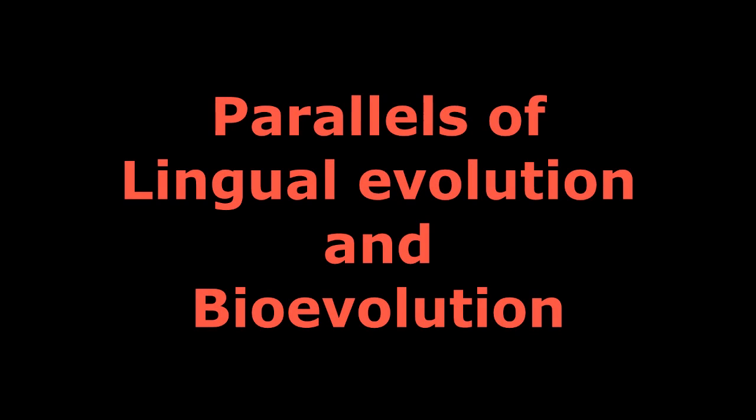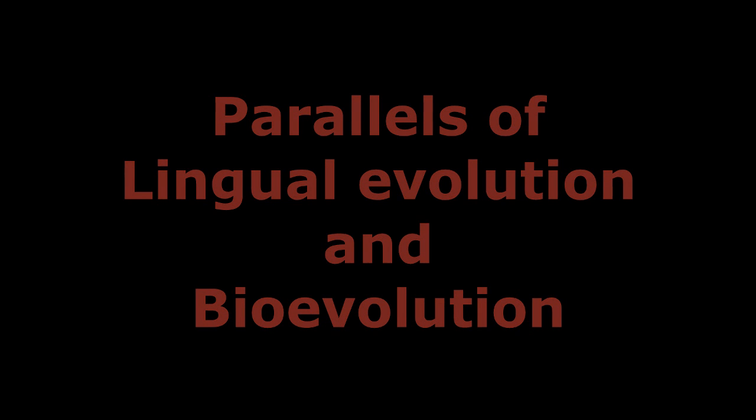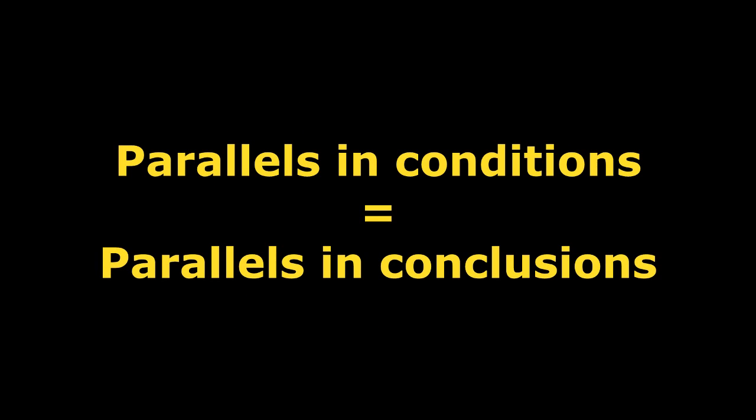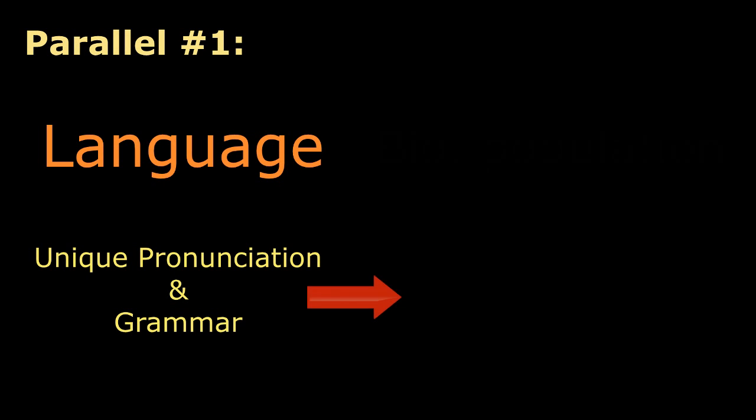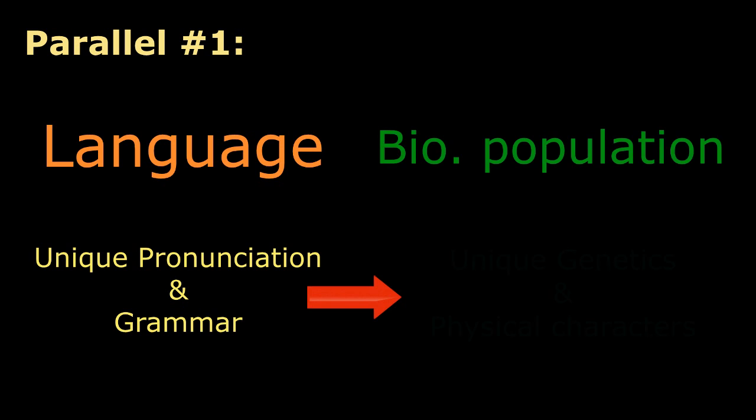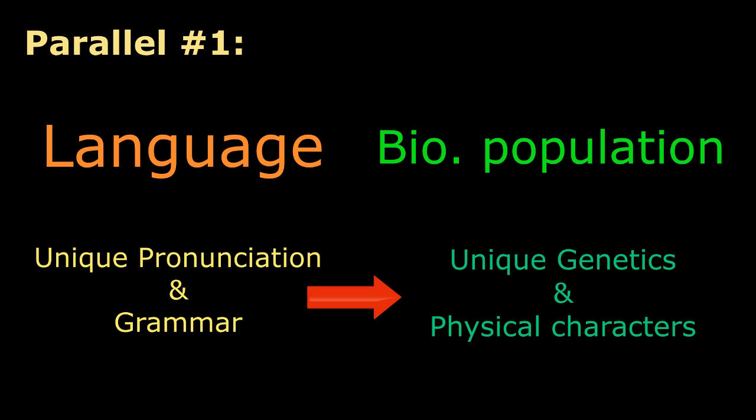There are many parallels one could notice between a language's development and biological evolution, and the existence of these parallels is precisely what allows us to undertake classification with regard to the evolution of these languages. The first of these parallels is that the characteristics of languages' pronunciation and grammar can be thought to be directly analogous to a biological species' physical and genetic characteristics, which can then be used for reconstructing evolutionary relationships.